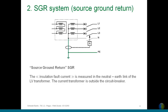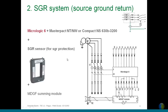The second type of ground fault protection is HGR — with Micrologic 6, we measure directly the fault current coming back to the neutral of the transformer. For this type of protection you need an external sensor — the HGR sensor, available in the catalog — and you also need the MDGF module. The HGR sensor is placed directly on the earthing conductor of the transformer.